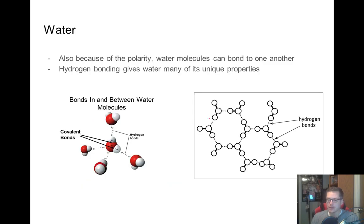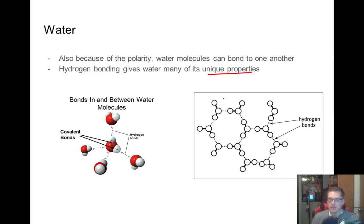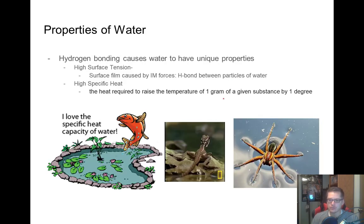Now because of the hydrogen bonding and because of the polarity, water has really unique properties. Water molecules stick together with one another because of the hydrogen bonding — notice there are a lot of opportunities to hydrogen bond: a hydrogen bond can occur here and here and here. This diagram is reminding you that hydrogen bonds and covalent bonds are not the same. We call them hydrogen bonds because they're so much stronger than other intermolecular forces, but they're quite weak compared to actual chemical bonds. Those are the two main reasons why water is very unique: it's polar and it has lots of capabilities for hydrogen bonds.